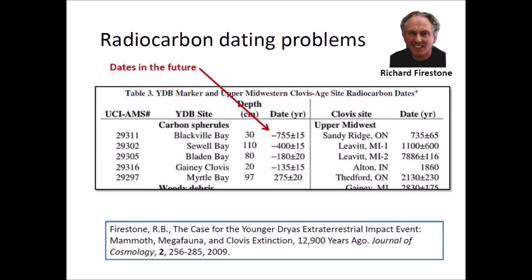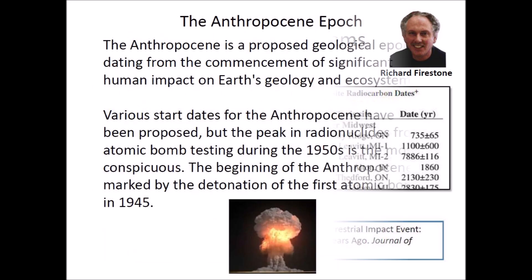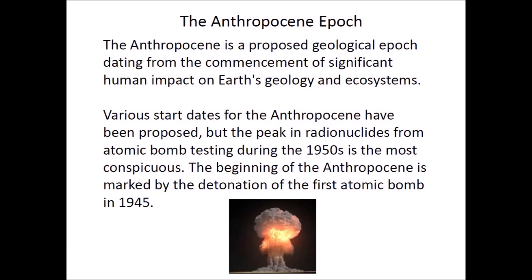A paper published in 2009 by Richard Firestone showed that four Carolina Bays out of five had radiocarbon dates in the future, presumably from an unknown source of carbon-14 enrichment, making it impossible to use radiocarbon to date the emplacement of the Carolina Bays. The Anthropocene is a proposed geological epoch dating from the commencement of significant human impact on Earth's geology and ecosystems, and the peak in radionuclides from atomic bomb testing during the 1950s is the most conspicuous marker. The beginning of the Anthropocene is marked by the detonation of the first atomic bomb in 1945.